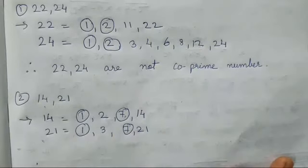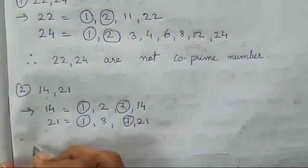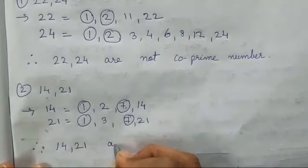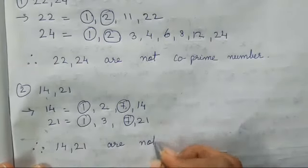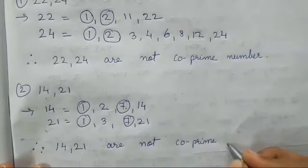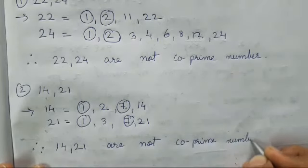1 and 7. Again, 2 factors are there. More than 1 factor is there. So therefore, 14 and 21 are not co-prime numbers.